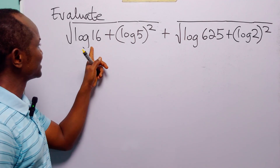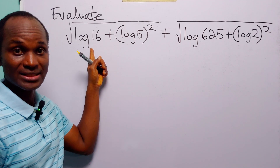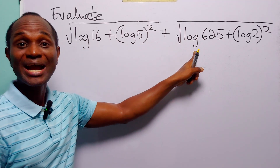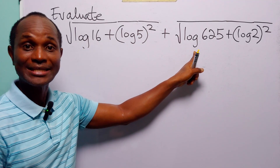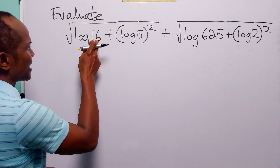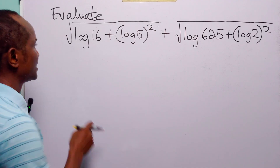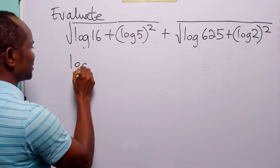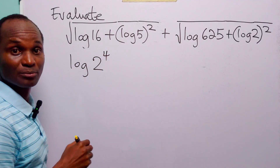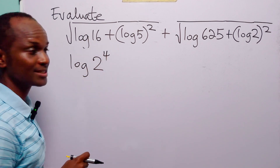We are going to start with log of 16. When we write log without specifying the base it means we are working in base 10. When we express 16 as a product of its prime factors, this is going to be log 2 to the power 4, because 2 raised to the power 4 is equal to 16.